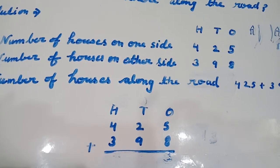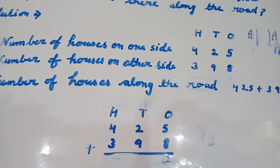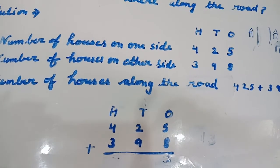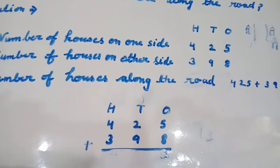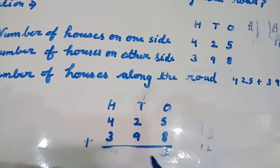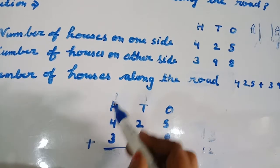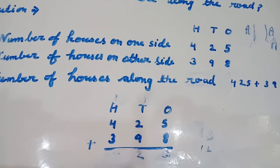Now, add 10s column. 9 plus 2 plus 1 tens equals to 12 tens. So we will write 2 here and 1 hundred carryover.